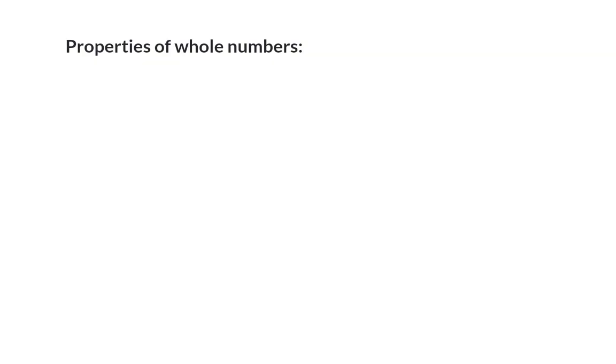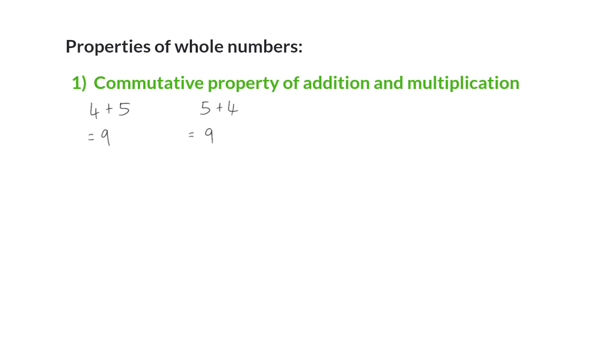There are a few properties that apply when you are working with whole numbers. These properties supply you with different acceptable methods to get to the same answer. The first property is the commutative property that applies to addition and multiplication. This property says that when you are adding or multiplying, the order in which the numbers appear doesn't matter. For example, 4 plus 5 equals 9. But if you swap around the order of the numbers, you will still get 9. That is why this property applies to addition.